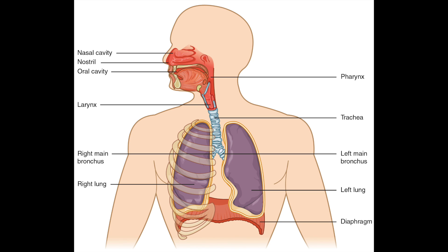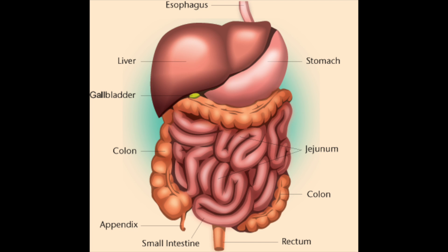There are also many other organs, including things like the small intestine. For plant organs, they have things like the leaf, the stem, and the root, and they contain all the tissues mentioned before.